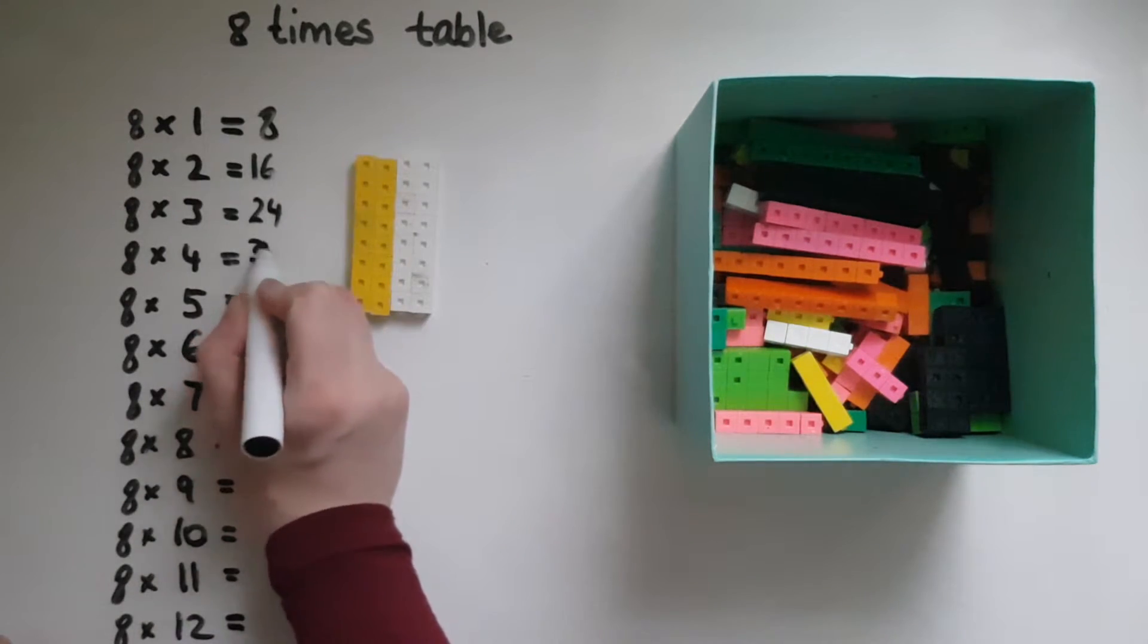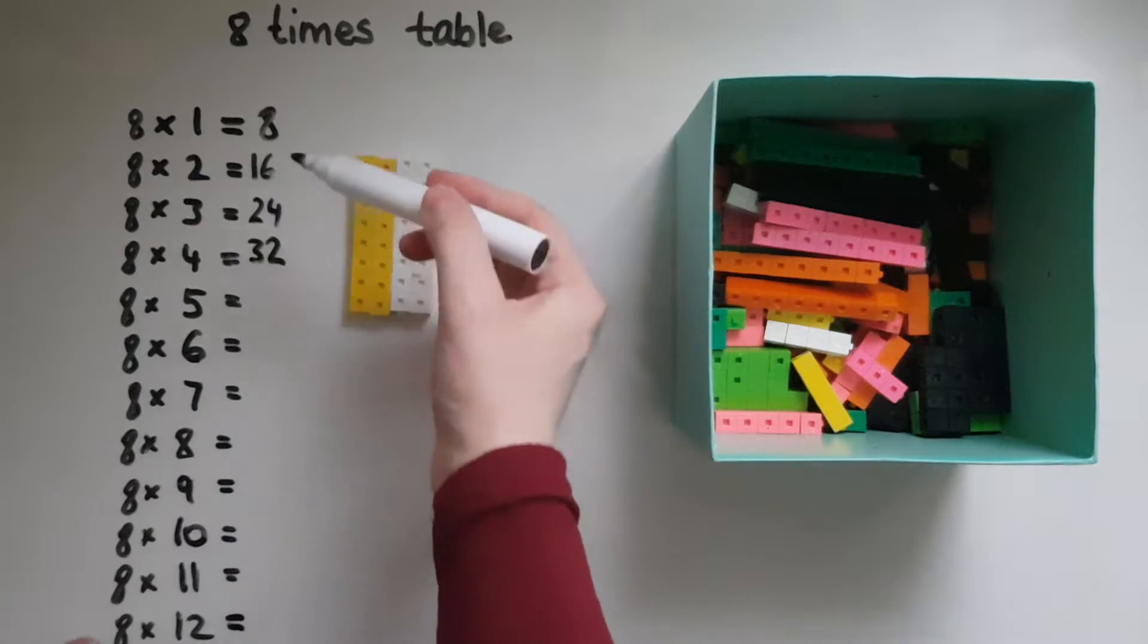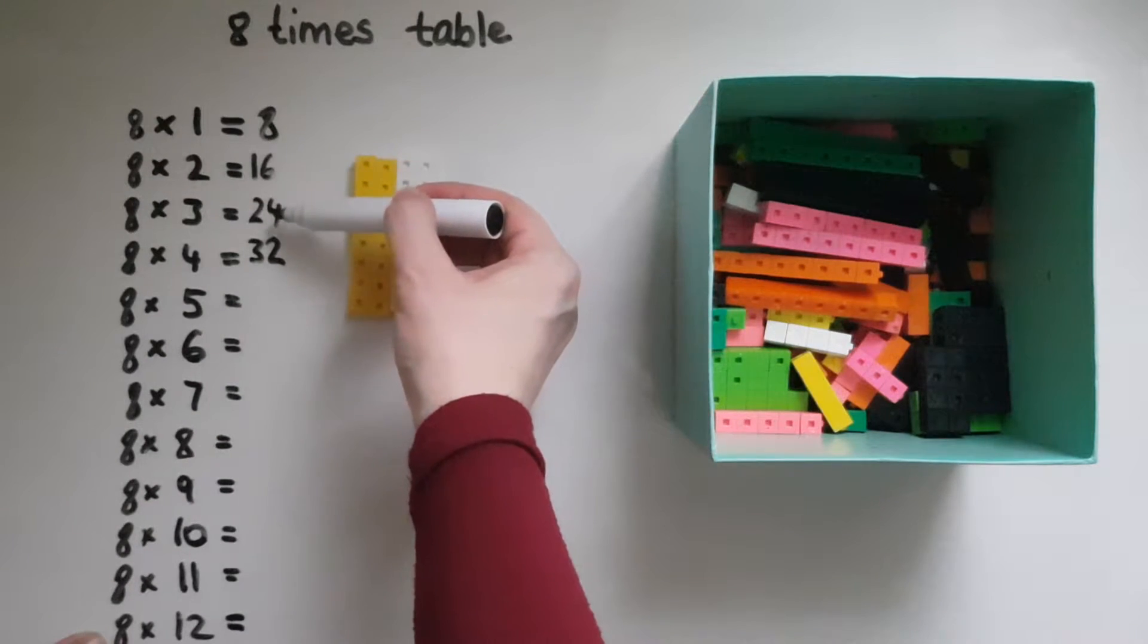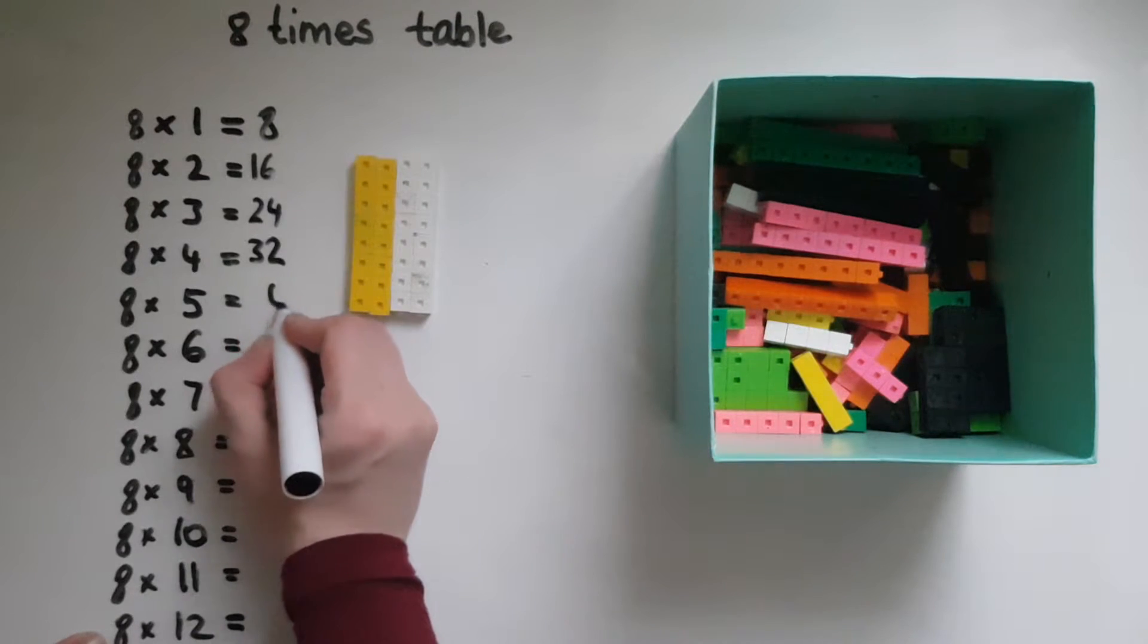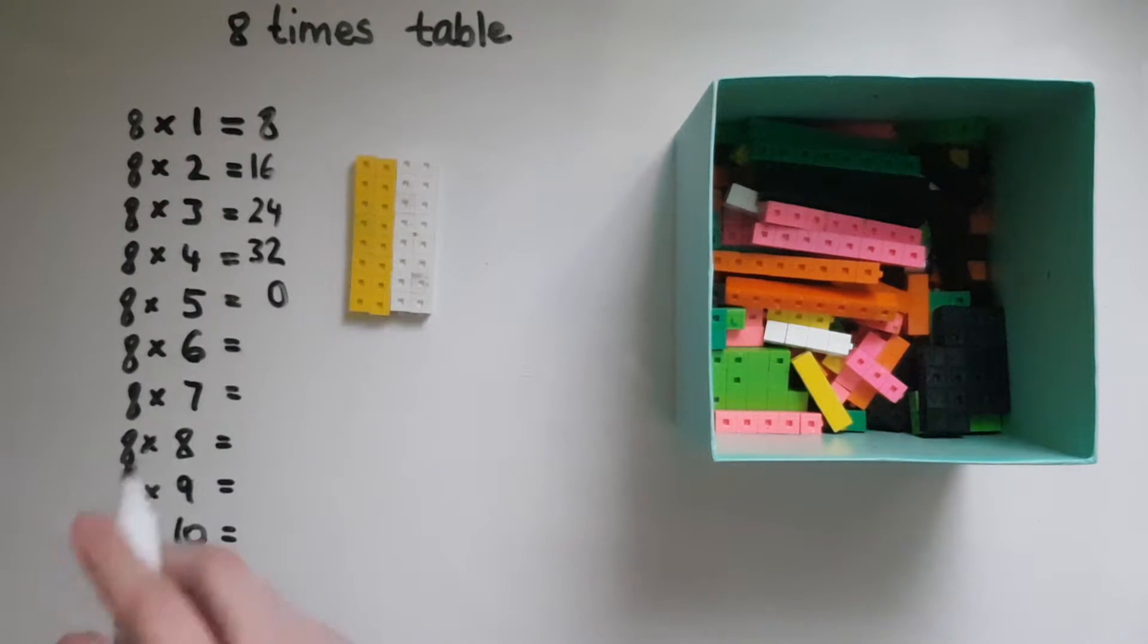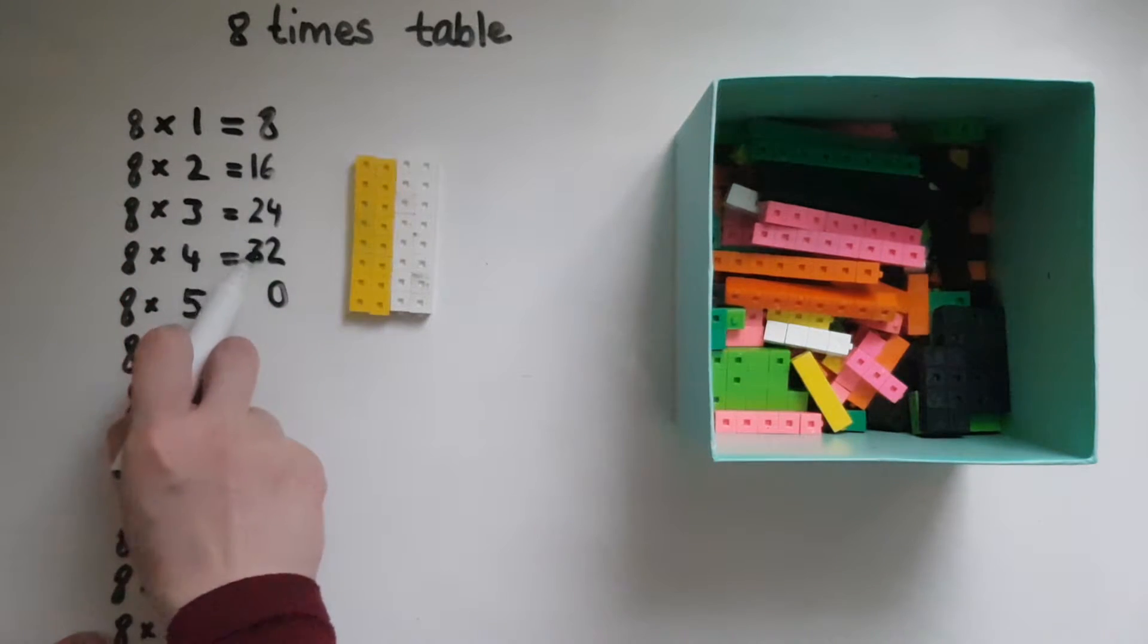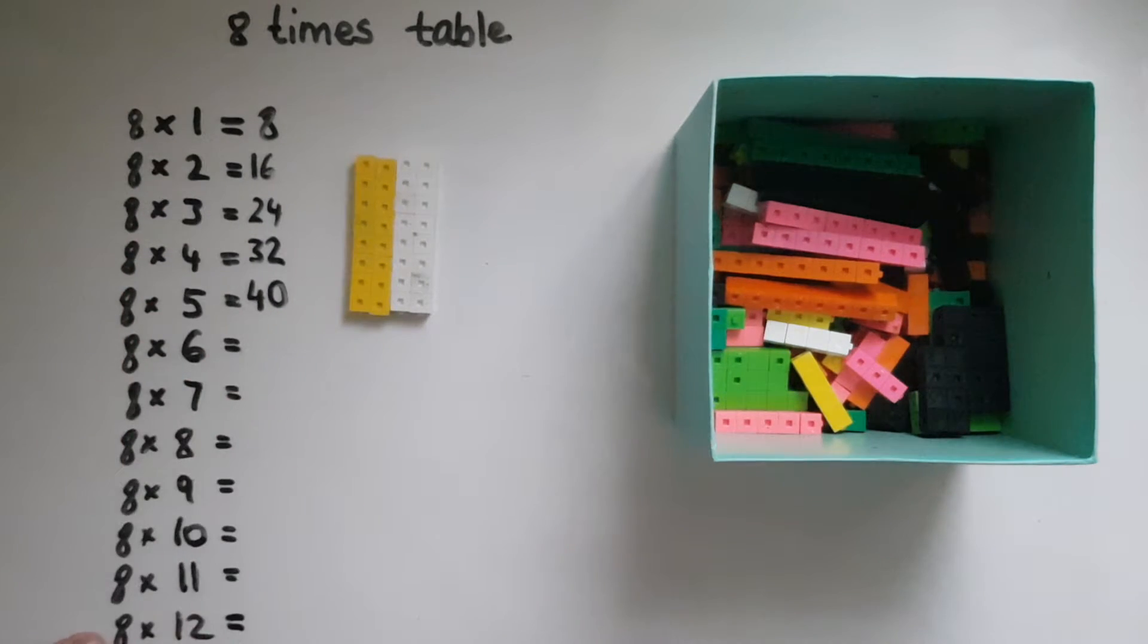So you can see the pattern: 8, 6, 4, 2. So the next one is going to be 0 and we're going 0, 1, 2, 3, 4. So we've got 40 so far.